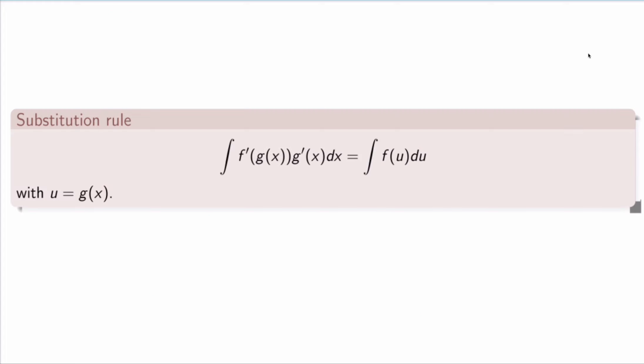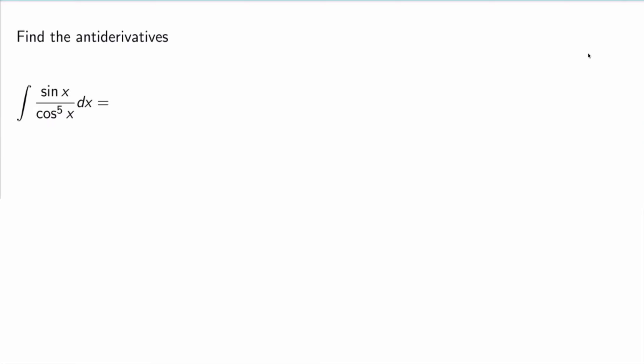The substitution rule: ∫f′(g(x))·g′(x) dx = ∫f′(u) du, where u = g(x). Let's do more examples. Find the antiderivative of ∫sin(x)/cos⁵(x) dx. The part requiring thought is identifying u. Here I choose u = cos(x), because the term sin(x) dx is present and sine is the derivative of cosine — so sine could be the g′ term.